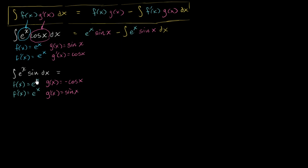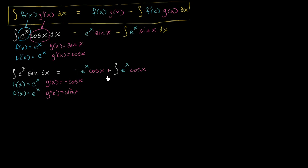Applying integration by parts to ∫eˣ sin(x) dx, we get f(x)·g(x) minus the antiderivative of f'(x)·g(x), which is negative eˣ cos(x) minus the antiderivative of eˣ times negative cos(x) dx. Taking the negative out of the integral, subtracting a negative becomes a positive, giving us negative eˣ cos(x) plus the antiderivative of eˣ cos(x) dx.